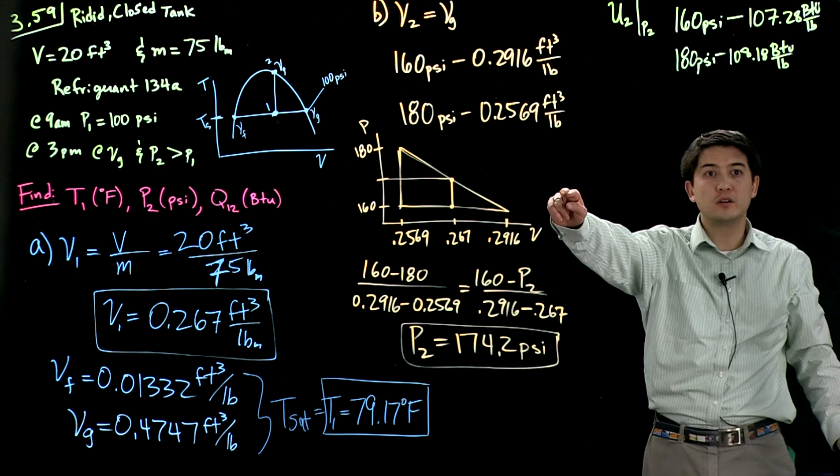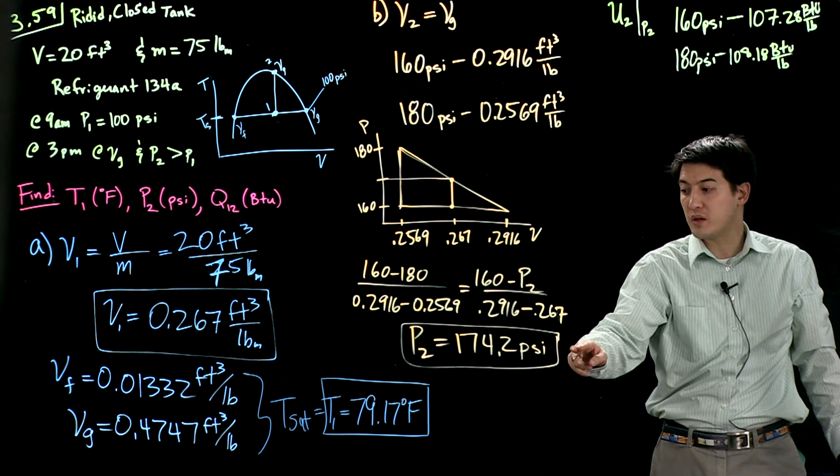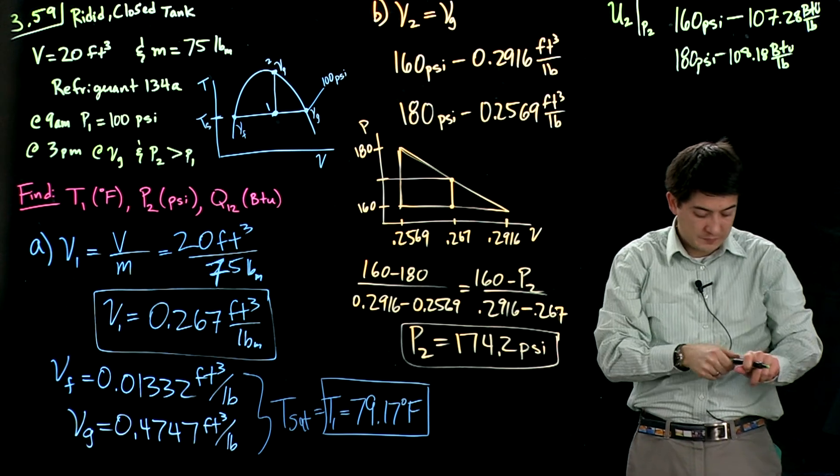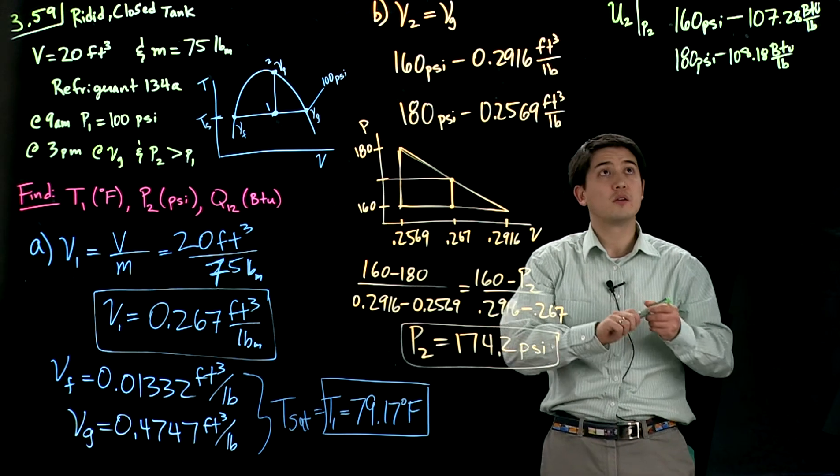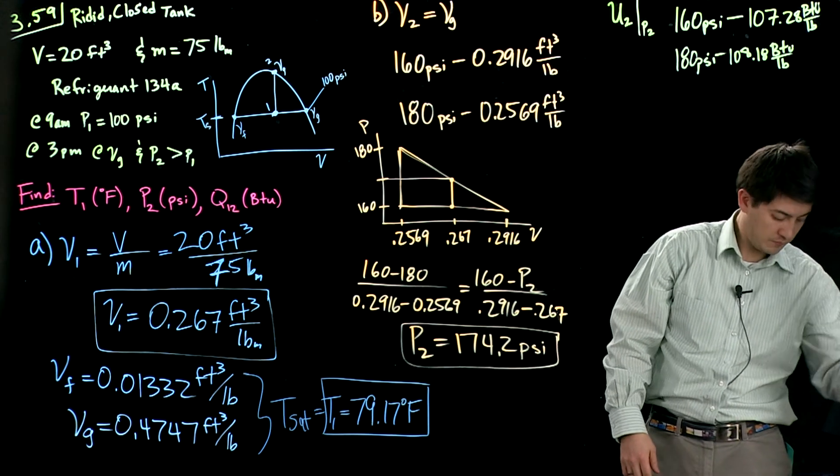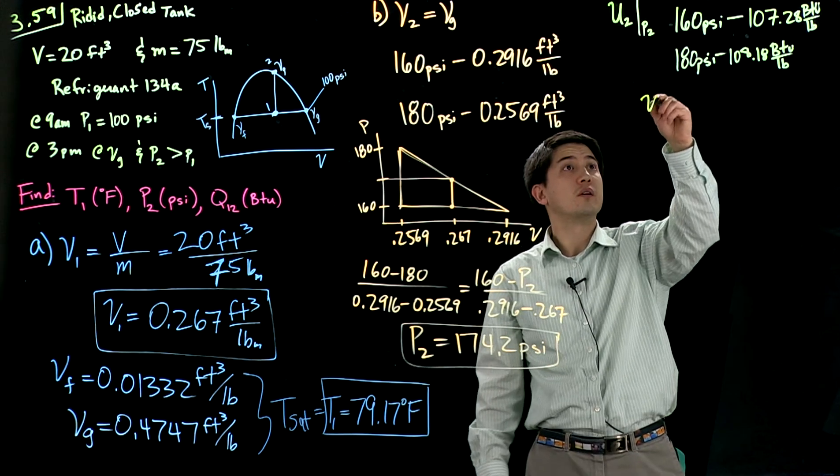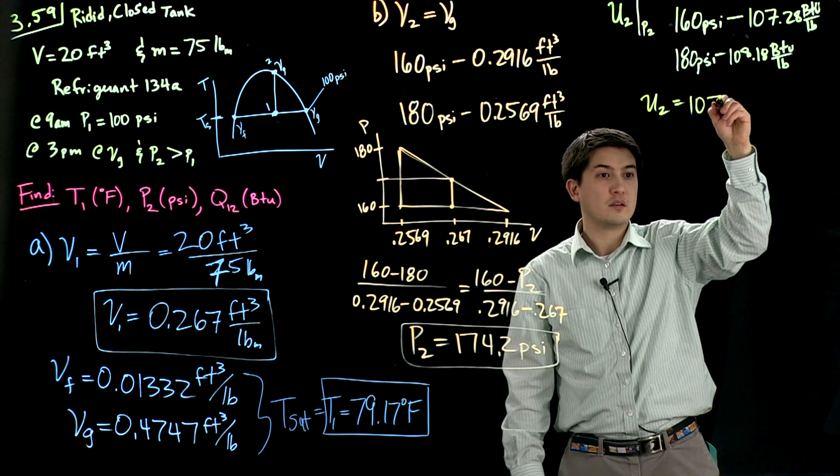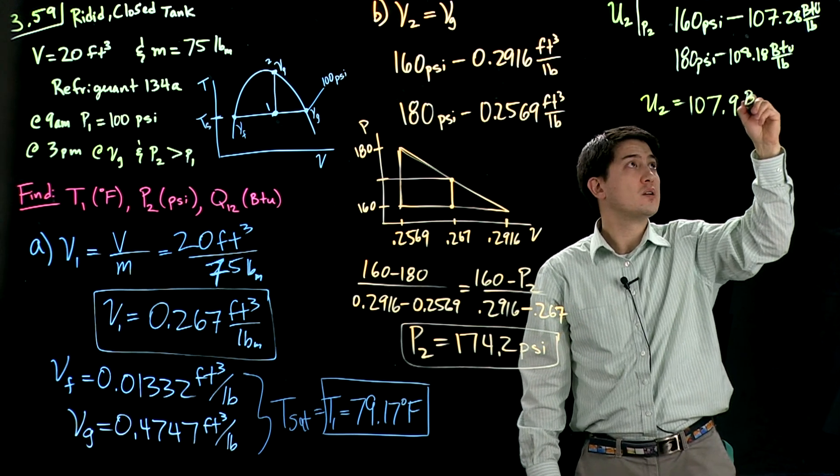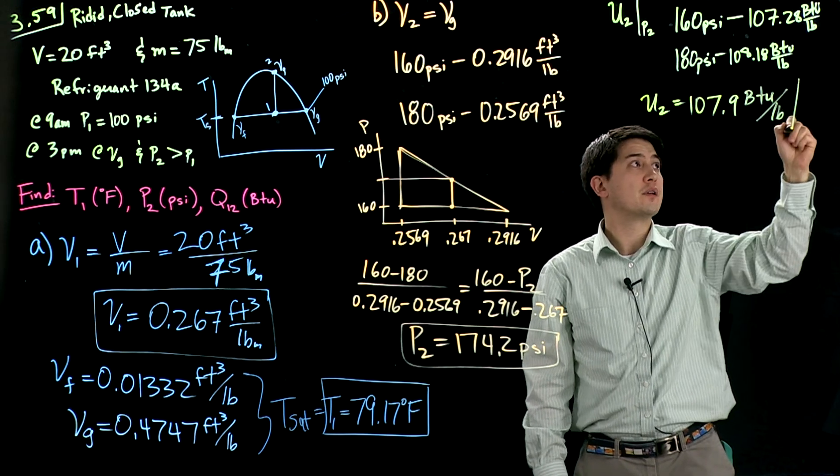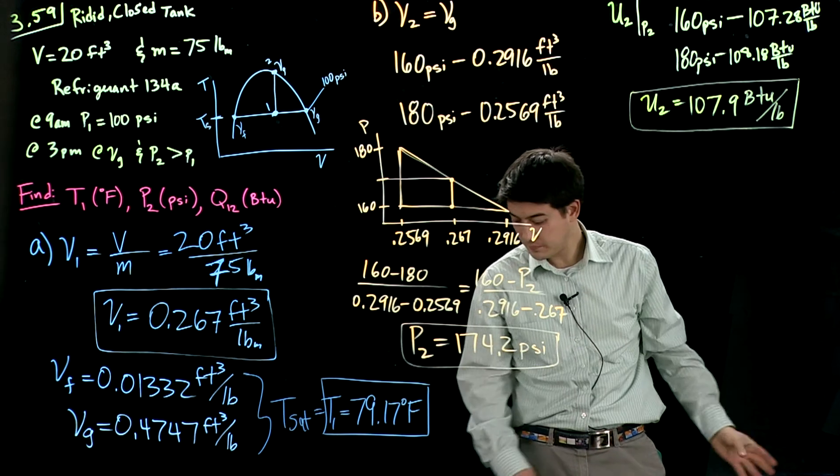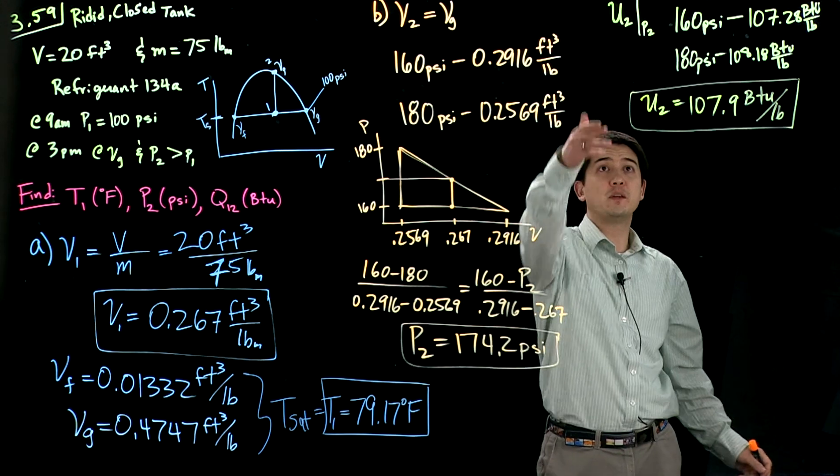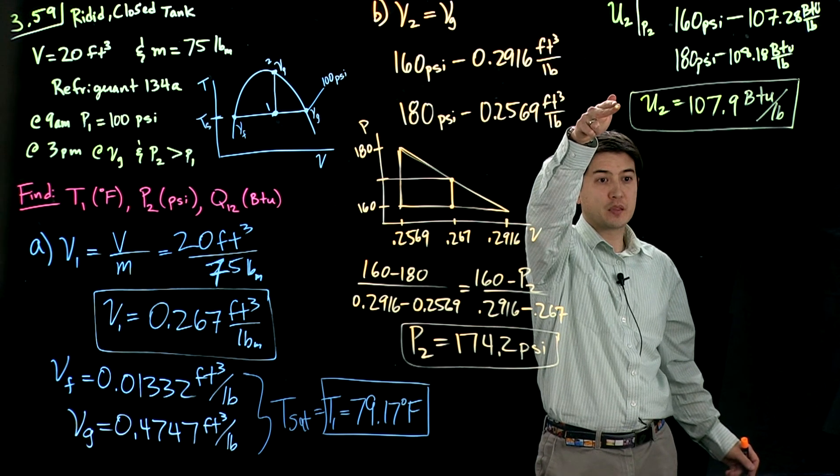Set up a very similar linear interpolation. This time we know we want to end up at 174.2 psi between these two. Find the specific energy that you want to end up in. So you do that. Specific energy would be 107.9 BTU per pound. 107.9 BTU for specific energy at state 2.